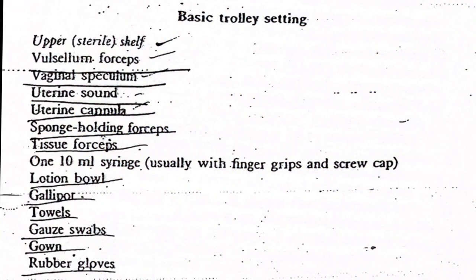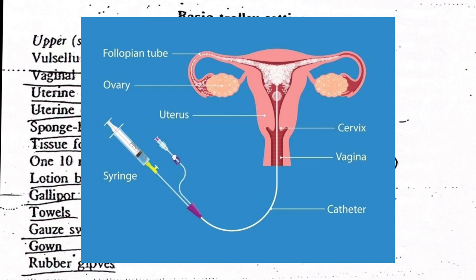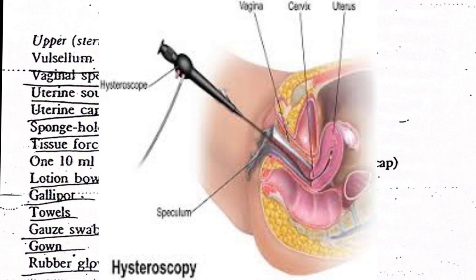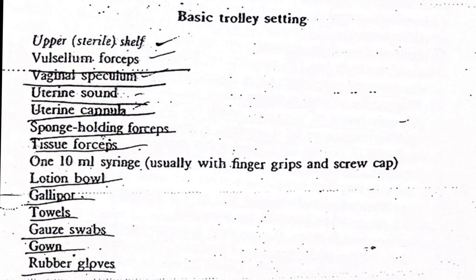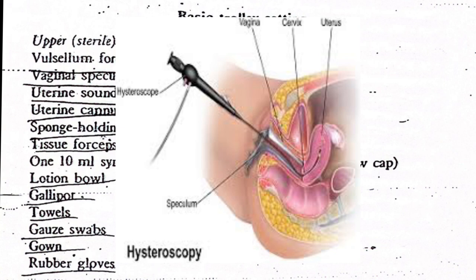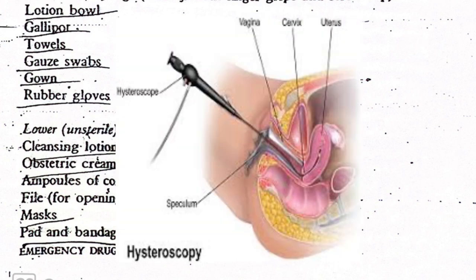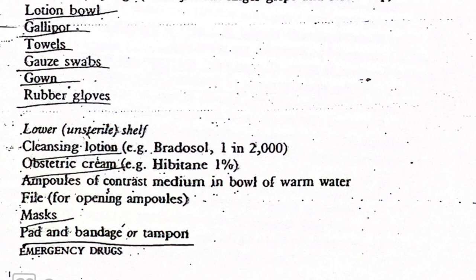Basic trolley settings — these are the things required during HSG examination. Upper sterile shelf: vulsellum forceps, vaginal speculum, uterine sound, uterine cannula, sponge-holding forceps, tissue forceps, 10 ml syringe usually with finger grips and screw cap, lotion bowl, gallipot, towels, gauze swabs, gown, and rubber gloves. Lower shelf: cleansing lotion, Hibitane 1 in 2000, a strict cream, lignocaine 1% ampoules, contrast medium in a bowl of warm water, a file for opening ampoules, mask, and pads or tampon.